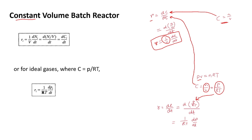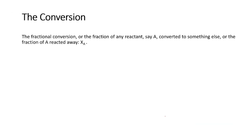Here, 1/RT is taken to be constant because R is the universal gas constant and temperature T is taken to be constant for the constant volume batch reactor. So the only change that occurs is due to pressure, giving you the rate expression in terms of pressure of the species present in the batch reactor.